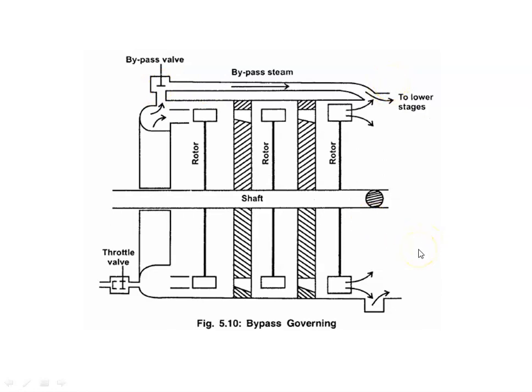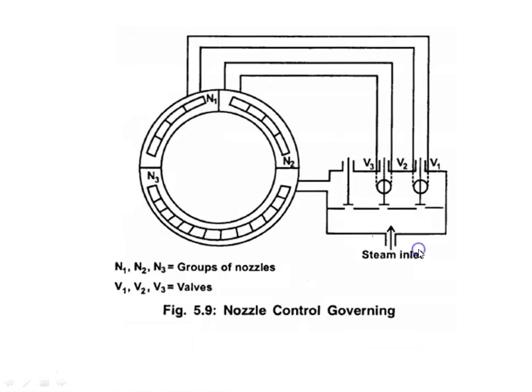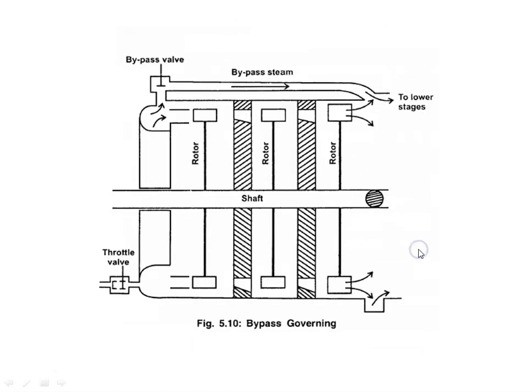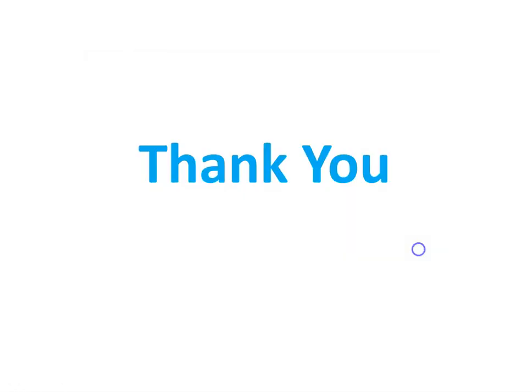So, the three governing methods are throttle governing, nozzle governing, and bypass governing. The main purpose of governing is to control and maintain the speed of the turbine as constant, irrespective of the load on the turbine. Thank you very much.